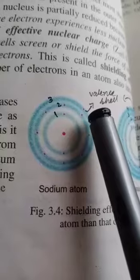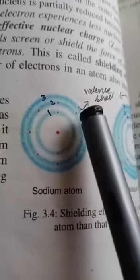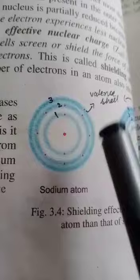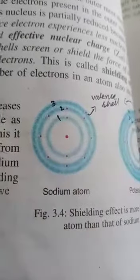In the third shell, the third shell is the last shell and then there is no other shell. So this last shell, the third shell for sodium, is called as its valence shell.